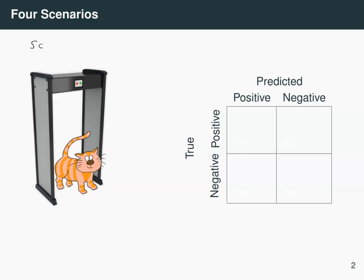In scenario one, let's say that Mr. Pickles is carrying a weapon on him. So he's carrying a pair of scissors because he was about to get a haircut. And the alarm goes off. So he's got a weapon, and the detector correctly identifies it. Scenario one lies in this box here. It is a true positive.